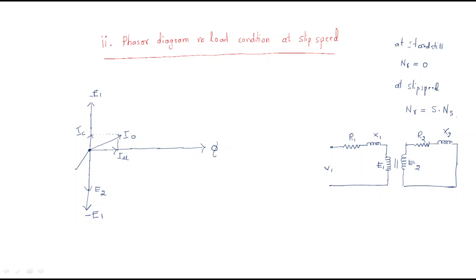The current generated in the rotor circuit is taken as I2. The phase difference between E2 and the rotor current is φ2. The referred rotor current is I2 dash. The combination of I2 dash and I₀ gives the stator current I1. This is the complete current generated from the stator circuit.